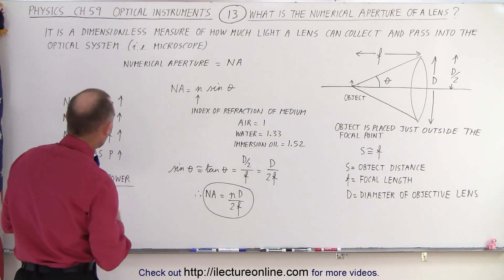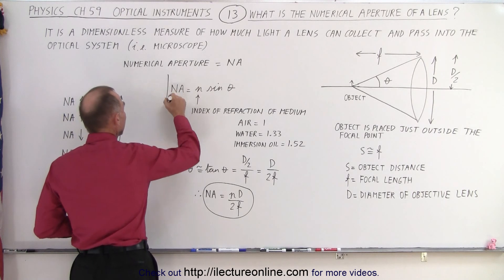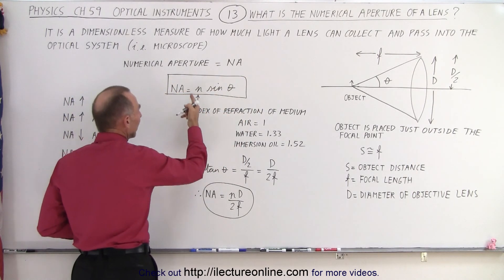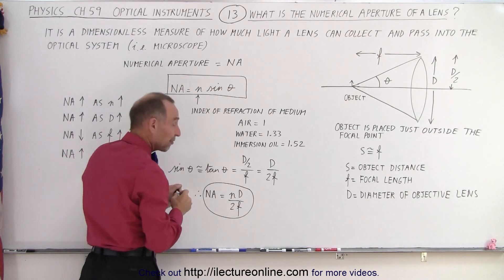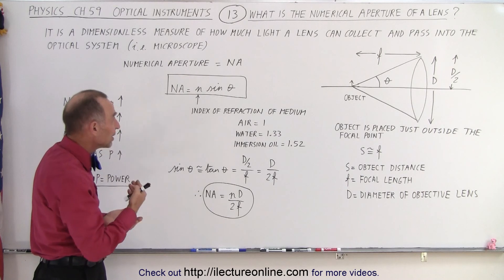So what do we call numerical aperture? We have an equation right here. NA is what we use for numerical aperture. Notice that it is equal to N, which is the index of refraction of the medium that the lens is in, times the sine of the angle theta.